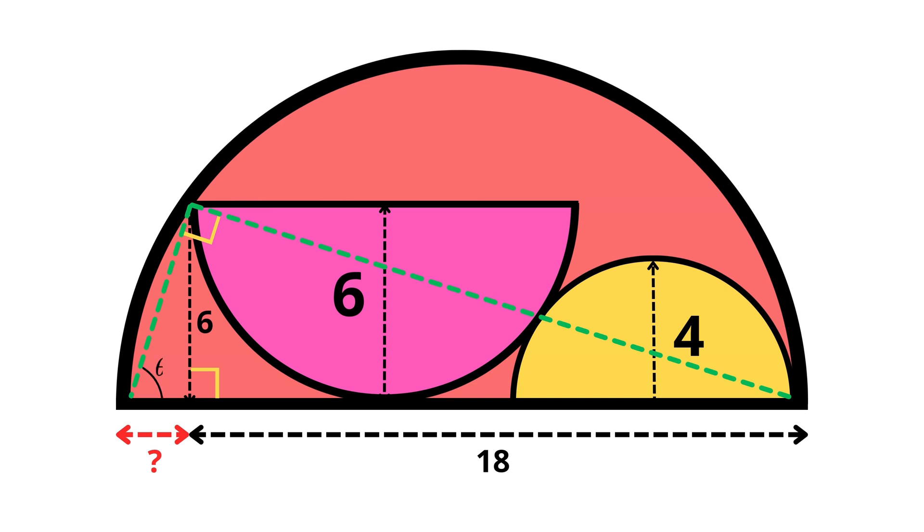Next, we're going to label this angle theta, and label the right angle in our small triangle. So now in our large triangle, we have a right angle, theta, and one unknown angle. And in our small triangle, we also have a right angle, theta, and one unknown angle.